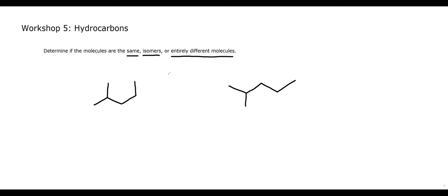Remember we can draw molecules many different ways, just like you can draw a table many different ways — upside down, from the left, from the right — but it's always a table. One way to determine if molecules are the same is to get the IUPAC name. If they have the exact same IUPAC name, they are the same molecule. If they are isomers, they will have different IUPAC names but the same molecular formula. If they're entirely different molecules, they will have different formulas.